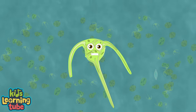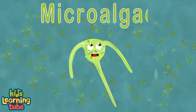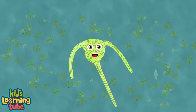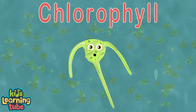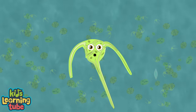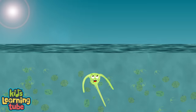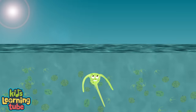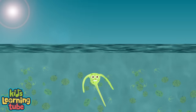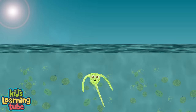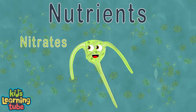We are called phytoplankton, also known as microalgae. We contain chlorophyll and require sunlight like plants, do you see? Phytoplankton are buoyant — that means we float in the upper ocean where sunlight is able to shine through the water.